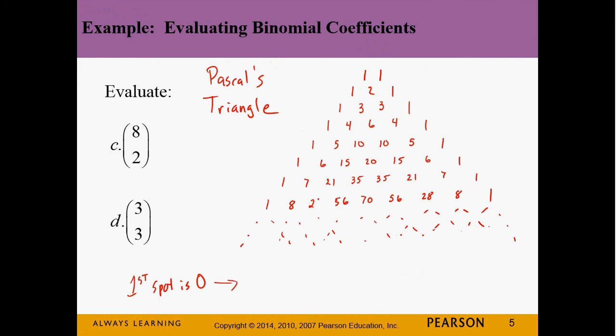Every number in Pascal's Triangle can be found by adding the two numbers above it. So 1+1=2, 1+2=3, 1+3=4, 1+4=5, 4+6=10, 10+10=20, 15+20=35, 21+35=56. So if you forget the formula for the binomial theorem, you can always draw out Pascal's Triangle and get your answer.